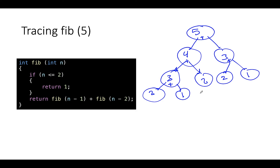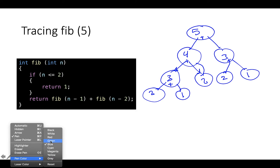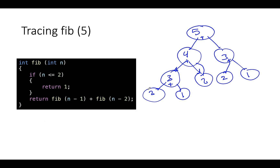Two actually hits the base case, so no more function calls — it returns one. Same for every call with two or one: they all hit the base case and return one. So for the call with three: two returns one, and one returns one, giving one plus one equals two, which is returned. For another call with three: two returns one and one returns one, giving two plus one equals three returned up.